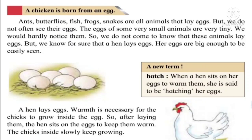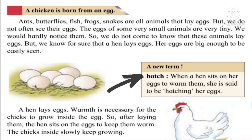Now let's see how the chicks come out of the eggs. A hen lays eggs, and here we are about to learn a new term: hatch. As soon as the hen lays eggs, it sits on them and provides warmth. The chick inside the egg starts growing because of this warmth. This process is called hatching. Hatch means when a hen sits on her eggs to warm them — she is said to be hatching her eggs.